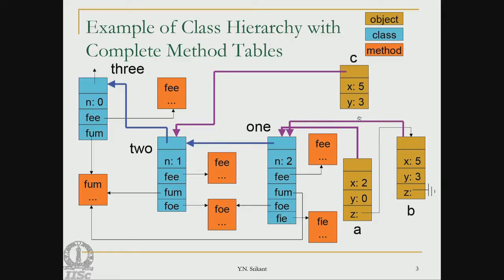There are objects a, b, and c. Object c is of type 2 and has 2 fields x and y. Objects a and b are both of type 1 and have 3 fields: x, y, and z. The most important thing is to find out which name maps to which method when a method call is made, and whether a particular method can actually access a given field.